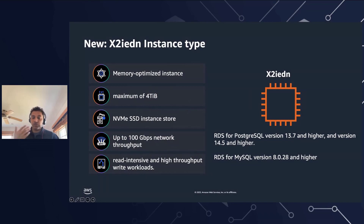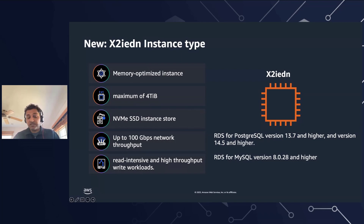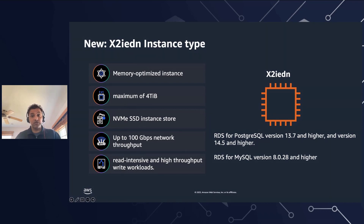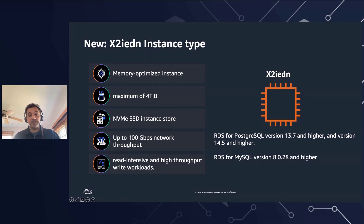Let's talk about new instance types we've added. One new instance type is X2IEDN, which is designed for very high read-intensive and high throughput workloads, like SAP HANA-type workloads. It uses third-generation Intel Xeon scalable processors, providing four times the memory of R6i — up to four terabytes of RAM and up to 100 Gbps of network throughput. It's available on Postgres versions 13.7 and higher, or 14.5 and higher.